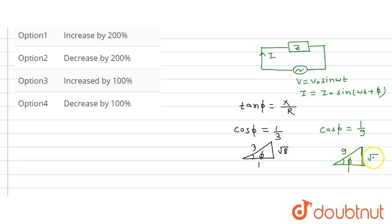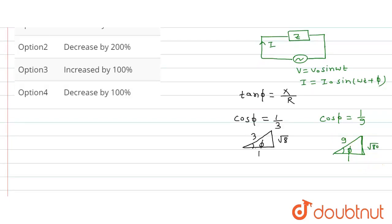So from here we can write X is equal to R tan phi. In the power factor 1/3 case, X will be R into tan phi, which is equal to under root of 8 by 1, so R into under root of 8.